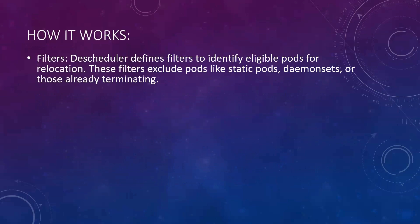The descheduler has two major components. The first is filters. The descheduler defines filters to identify eligible pods for relocation. You can define criteria so that if a pod matches, it should be rescheduled. Some pods can be rescheduled on a regular basis, and you can define this at the namespace level or whatever suits your organization. These filters will exclude static pods, daemonsets, and terminating pods — since daemonsets must run on each node.